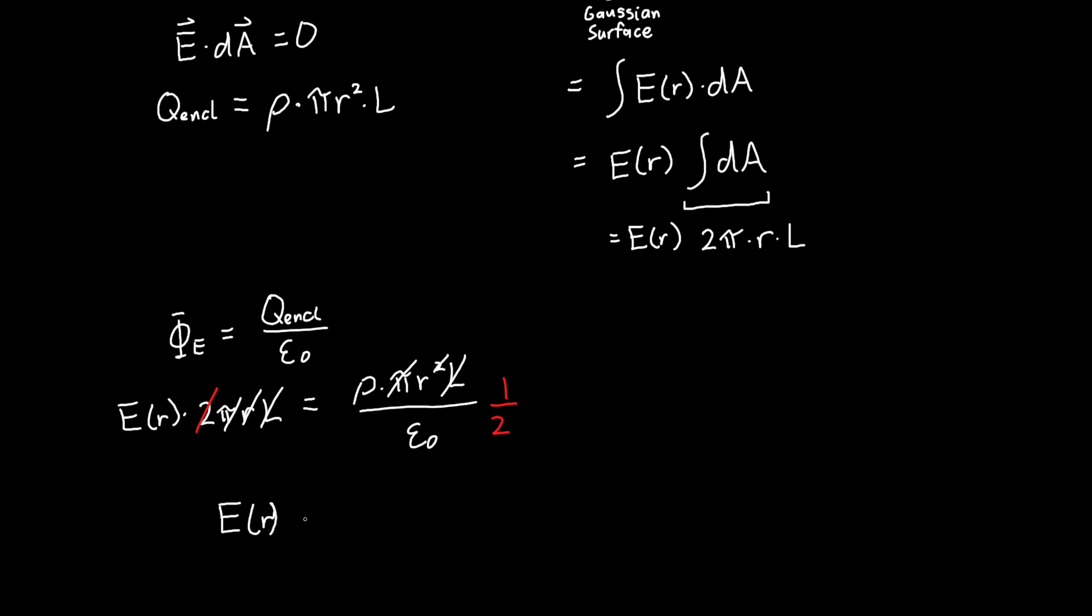And finally we've got our electric field, so E as a function of r is rho times r over 2 epsilon naught. So this is our answer for little r being less than the radius of our cylinder. So our electric field actually increases as we go further out from the center while we're inside the cylinder, because we're capturing more and more charge.